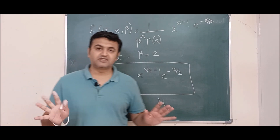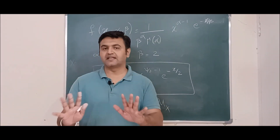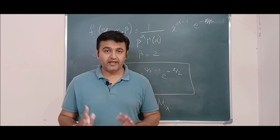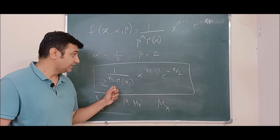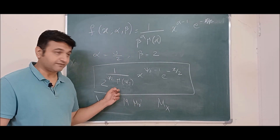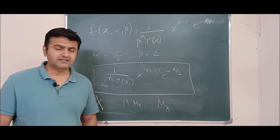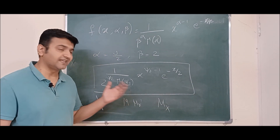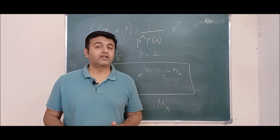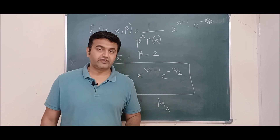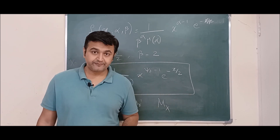So the upshot is: summation of Zi-squared follows chi-square distribution, with this as its probability density function for x greater than or equal to 0. We are not concerned with x less than 0 because chi-square is always a non-negative continuous random variable.